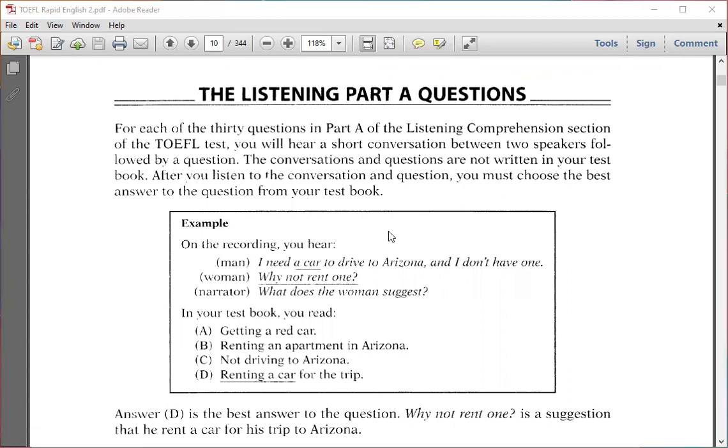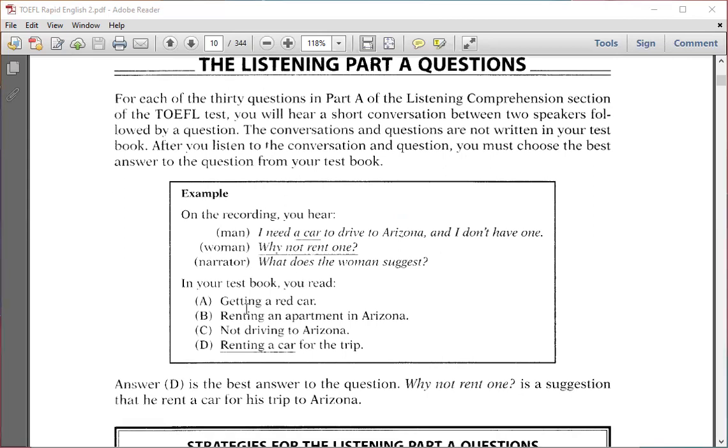For example, on the recording you hear: "I need a car to drive to Arizona and I don't have one." "Why not rent one?" Then there will be a question: What does the woman suggest? The options are: getting a red car, renting an apartment in Arizona, not driving to Arizona, and renting a car for the trip. The best answer is D, because "Why not rent one?" is a suggestion.